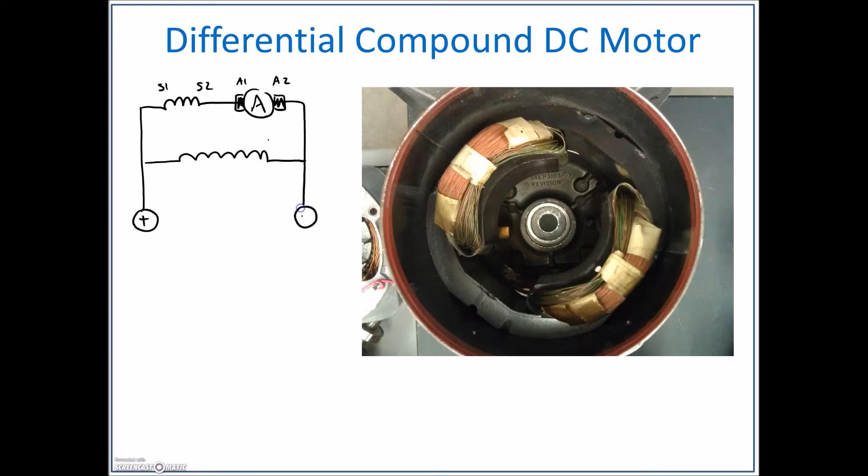We put in our source polarity here with F1 and F2. In the cumulative compound DC motor we found that these two magnetic fields were going in the same direction, and we found that by first setting it up as a series motor and seeing which direction it spun.